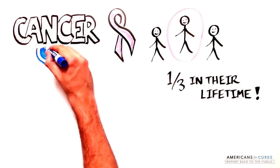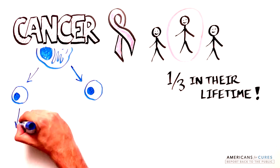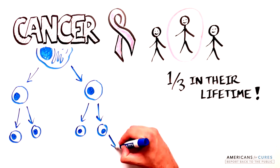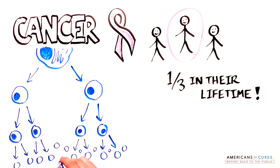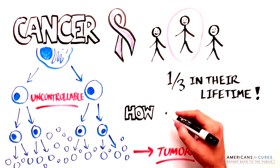Cancer occurs when our own cells divide uncontrollably, avoid the many protections against abnormal cells, grow into large tumors, and spread uncontrollably. But how does that happen and why?